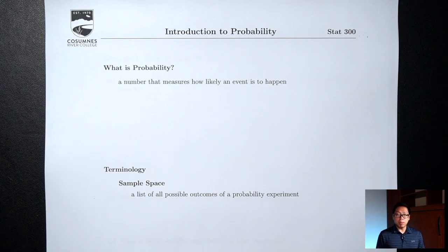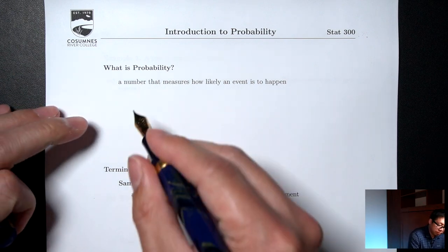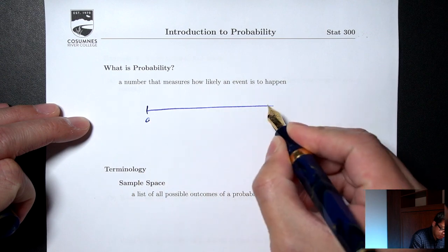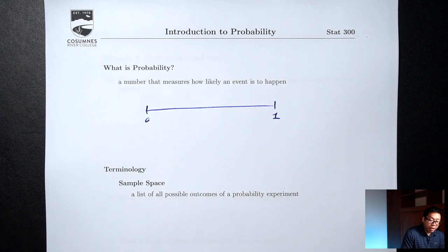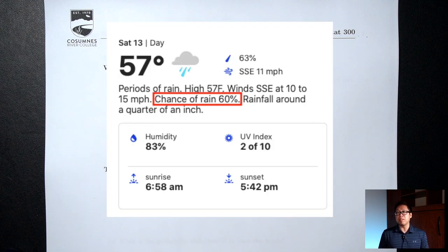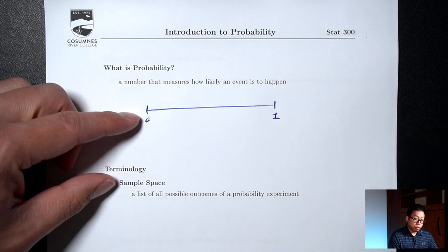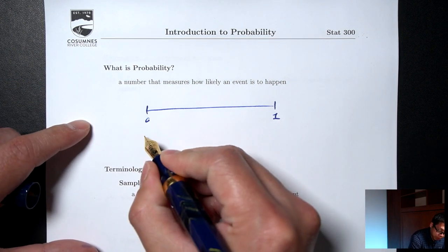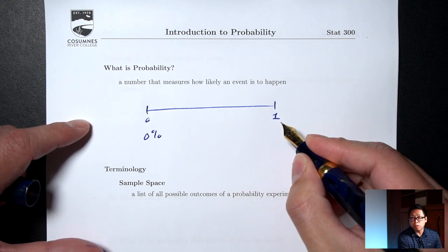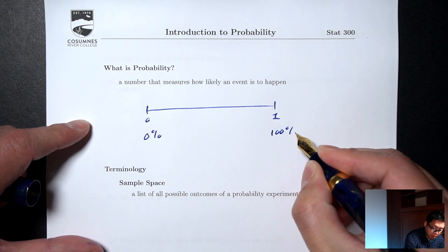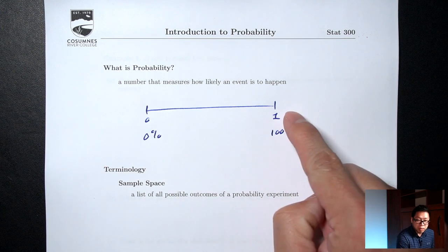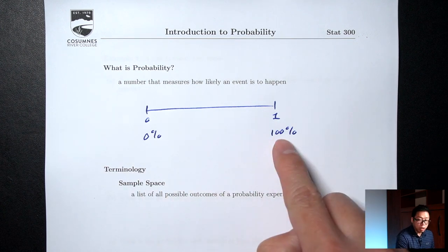What is probability? Probability is a number that measures how likely something is to happen. In particular, it's a number between 0 and 1. We're more familiar with probability when it's expressed as a percent — so when you look up the weather, you'll see things like the chance of rain today is 60%. That 60% is a probability. So probability is a number between 0 and 1 as a decimal, or 0% to 100% as a percent.